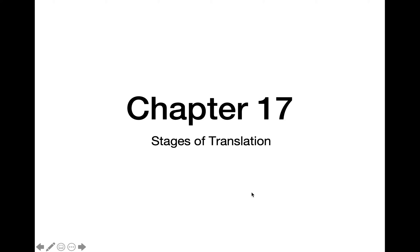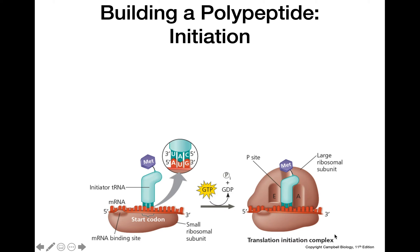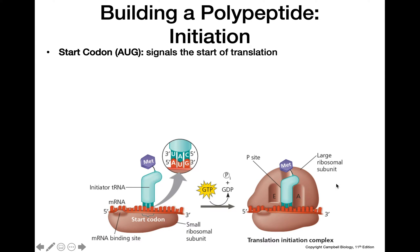This video is going to be about the stages of translation. We'll start with initiation. First, we need to know what our start codon is. Our start codon is going to be AUG, which tells us that we need to start translation at this particular spot.